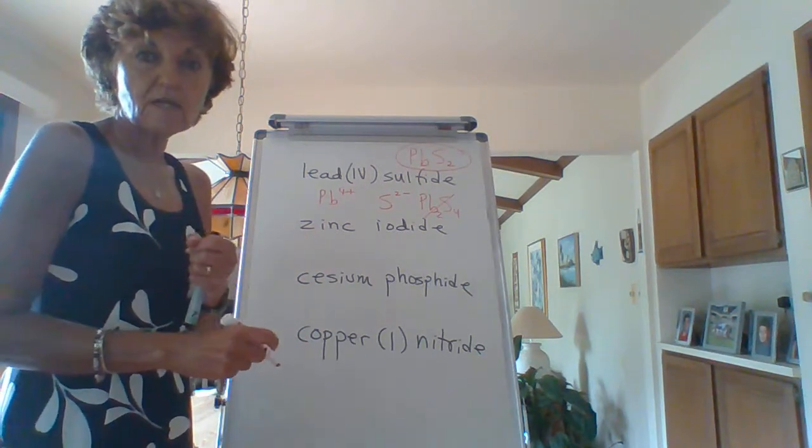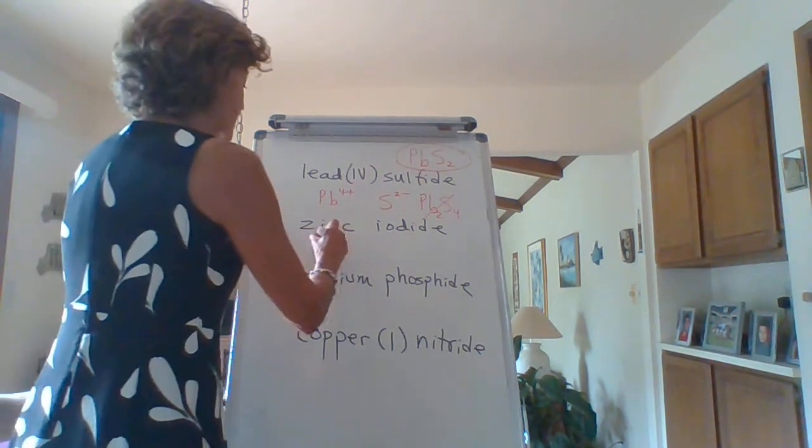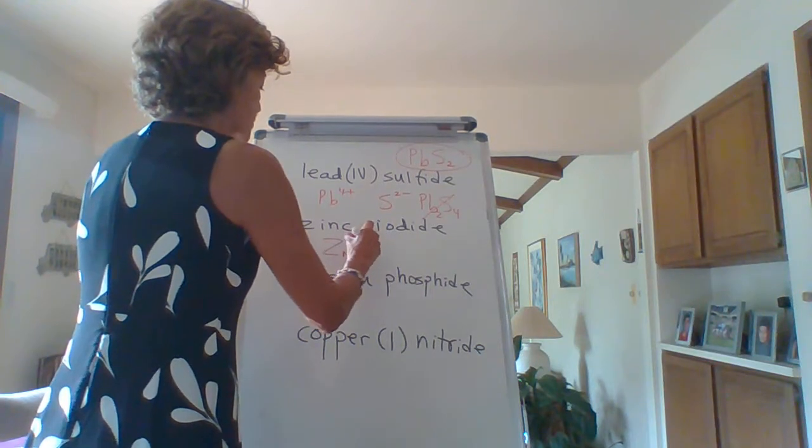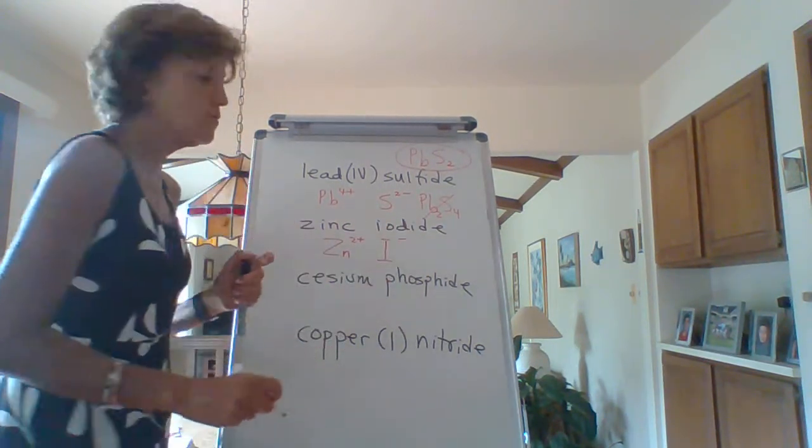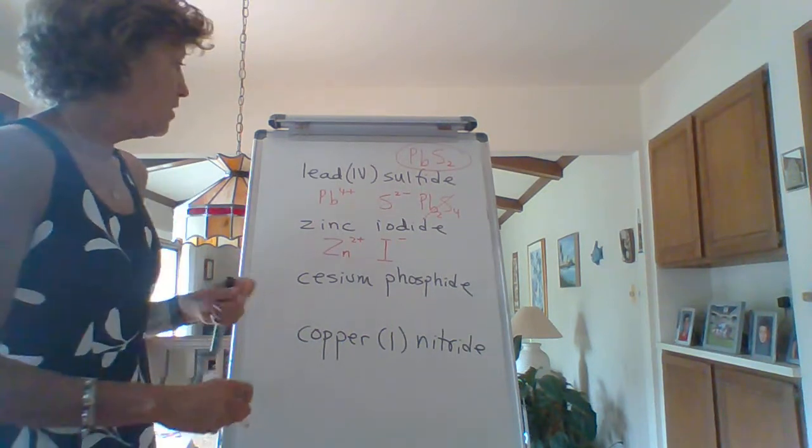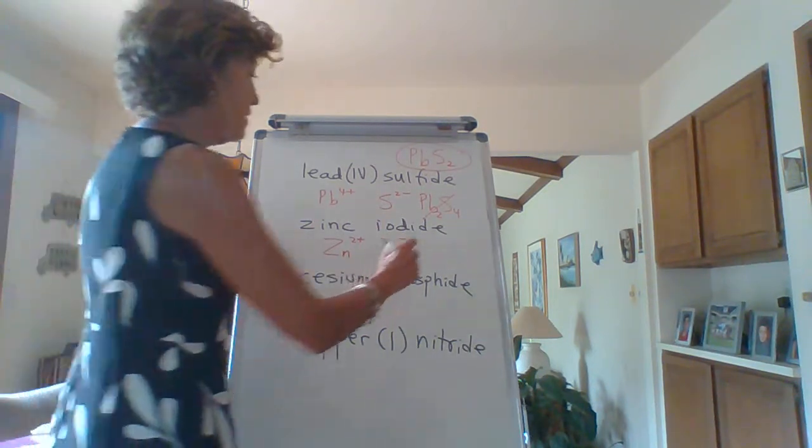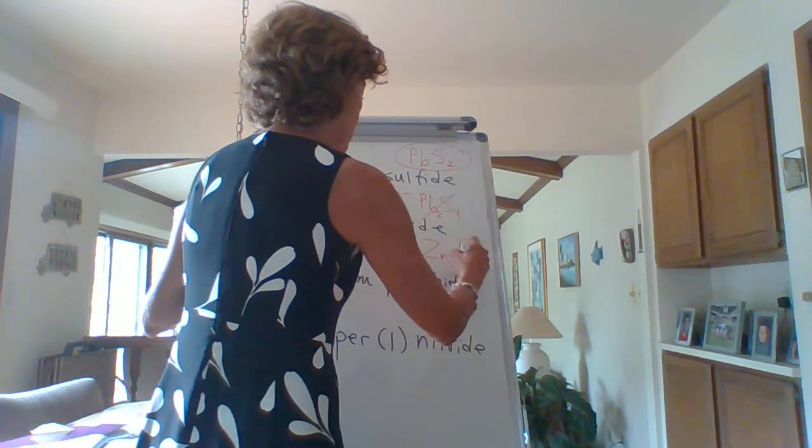Okay, zinc iodide. We know that zinc is a fixed charge metal and it's plus two. Zinc two plus. Iodide is I minus one because it's a halogen. All right, crisscross. ZnI2.